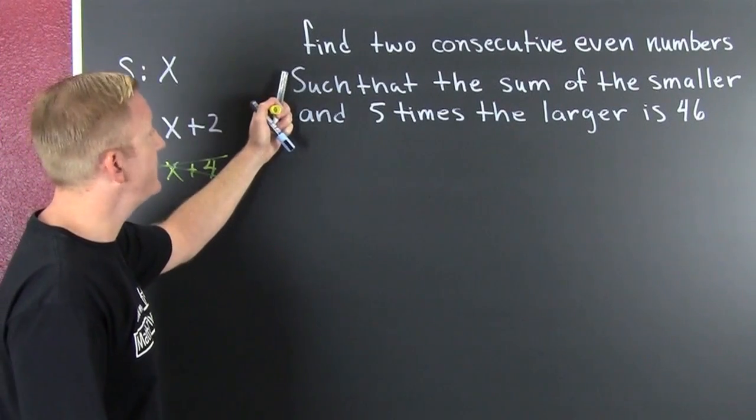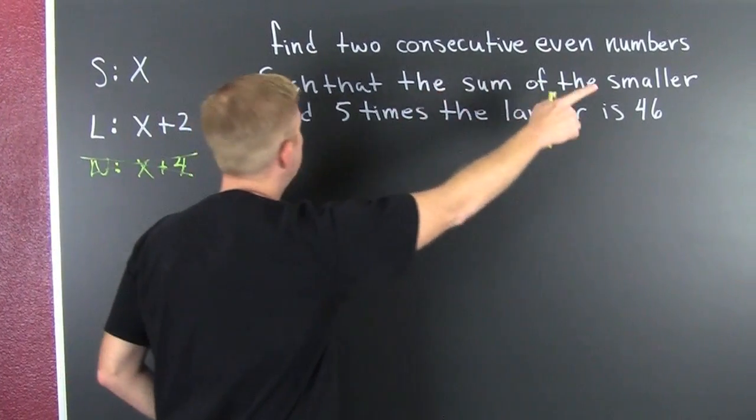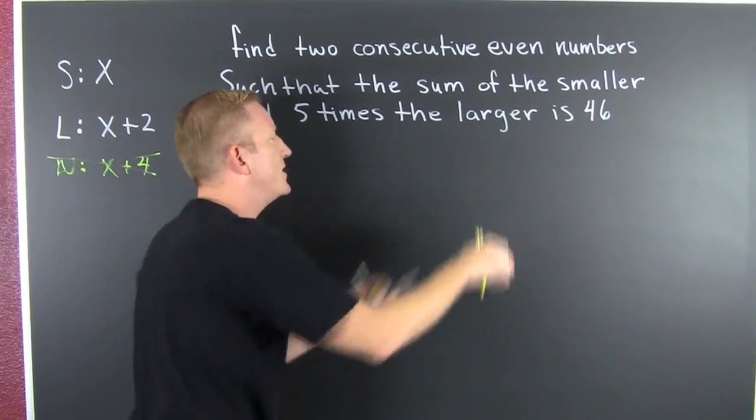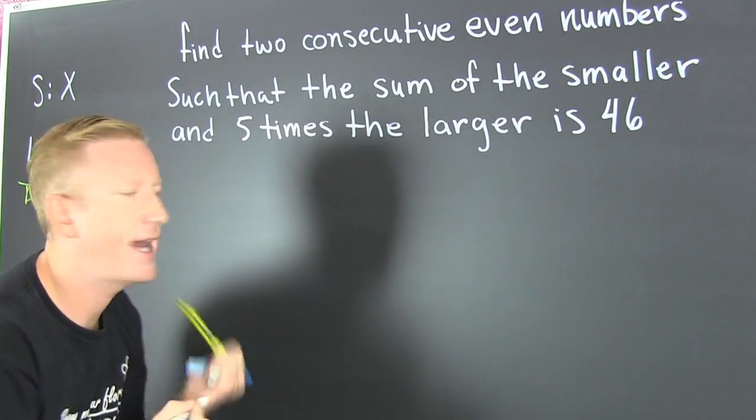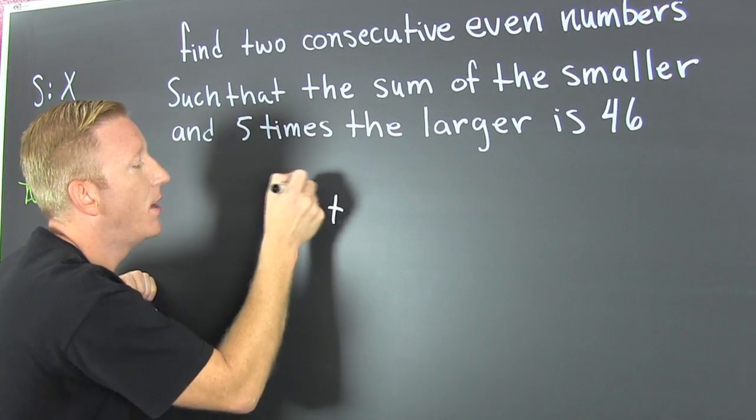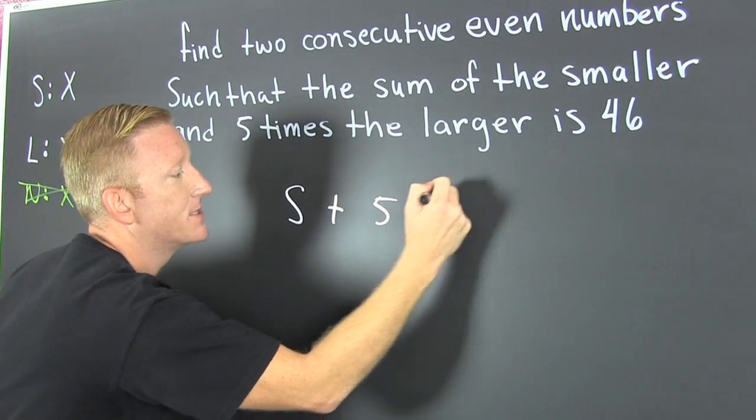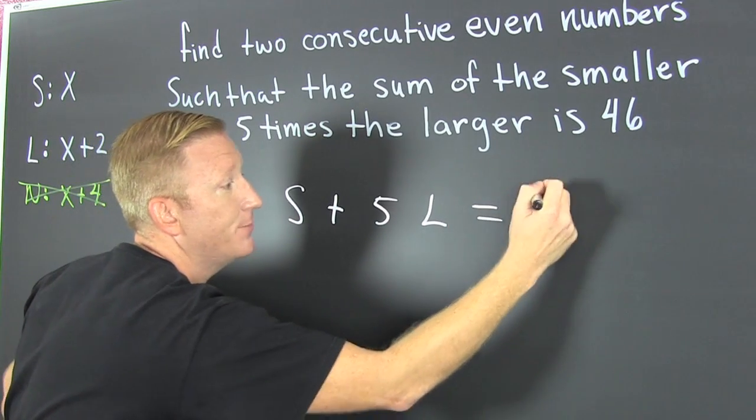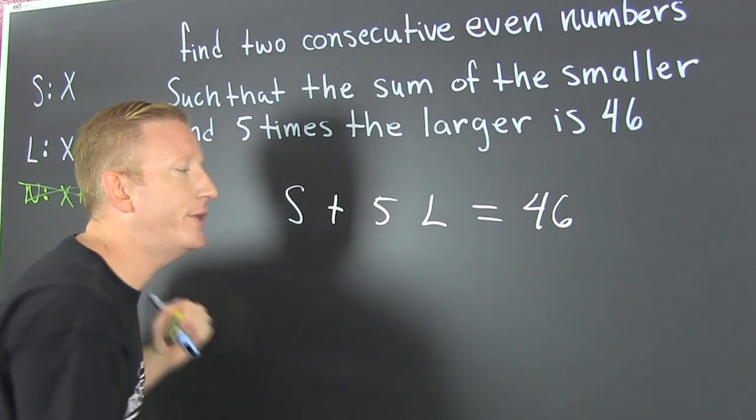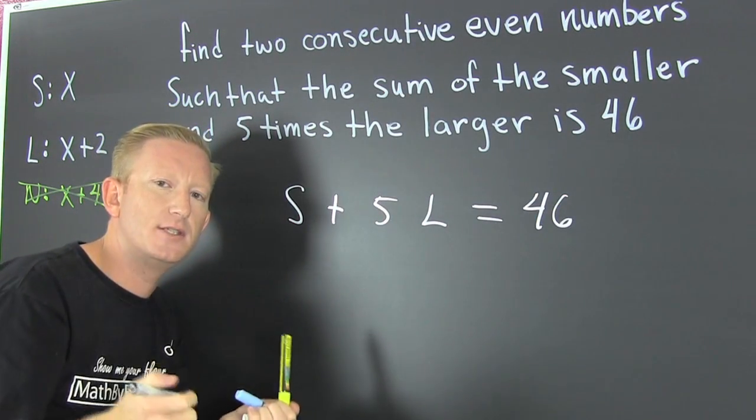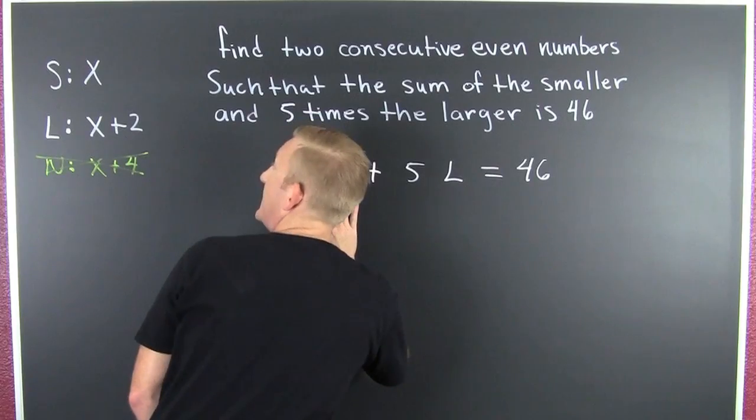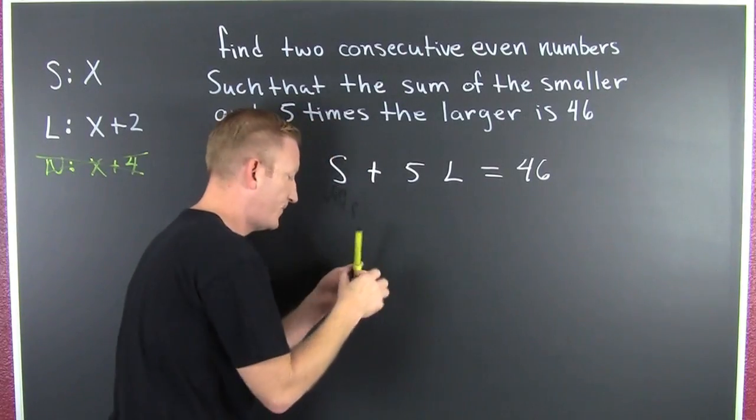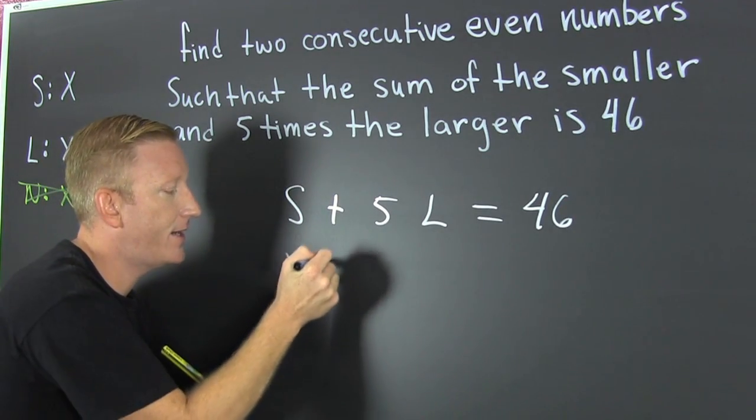Find 2 consecutive even numbers such that the sum of the smaller and 5 times the larger is 46. So, now, let's set that up. What do we have? We have the sum of the smaller and 5 times the larger. That has to be 46. I'm putting it in this extra step so we can see where these x's are going to come from. Well, we do know what the smaller number is. It's x. So, I'm going to put x right there.